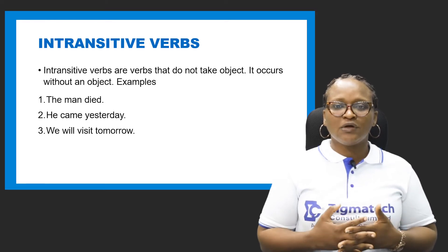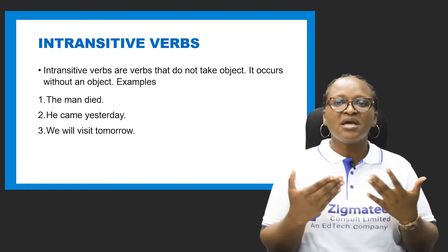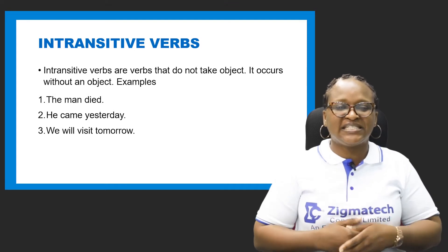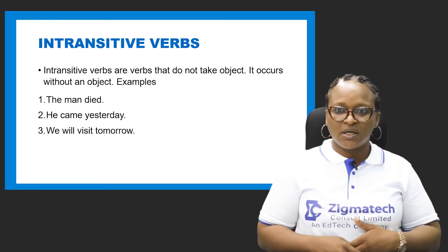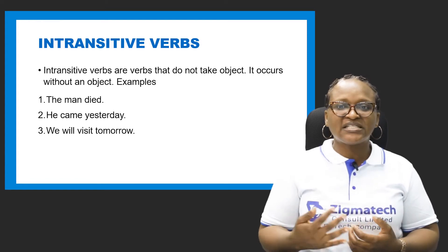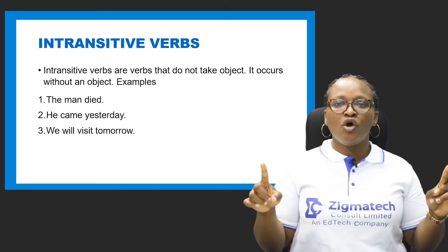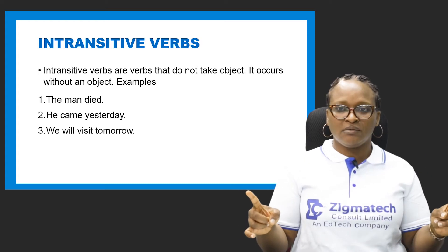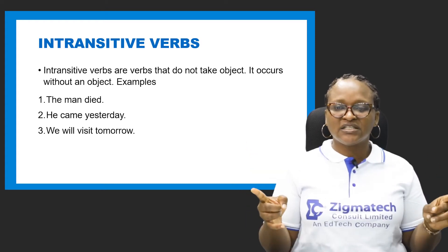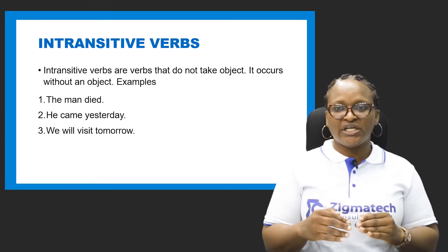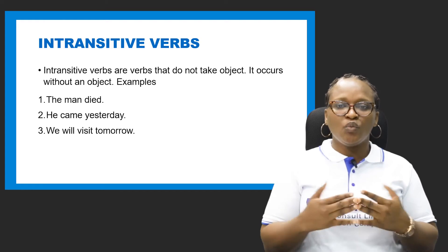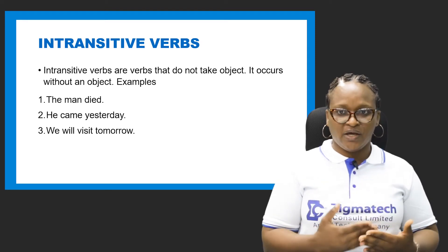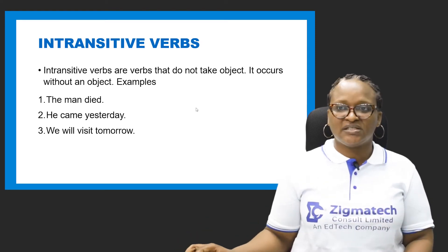Another example: 'He came yesterday.' The verb 'came' is intransitive because 'yesterday' is an adverb and not a noun, so there is no receiver of action. In sentence structure, we have subject, verb, object, complement, and adverbials. Once an adverbial ends a sentence, the verb before it is intransitive. Similarly, 'We will visit tomorrow' — tomorrow is an adverb and 'will visit' is an intransitive verb.